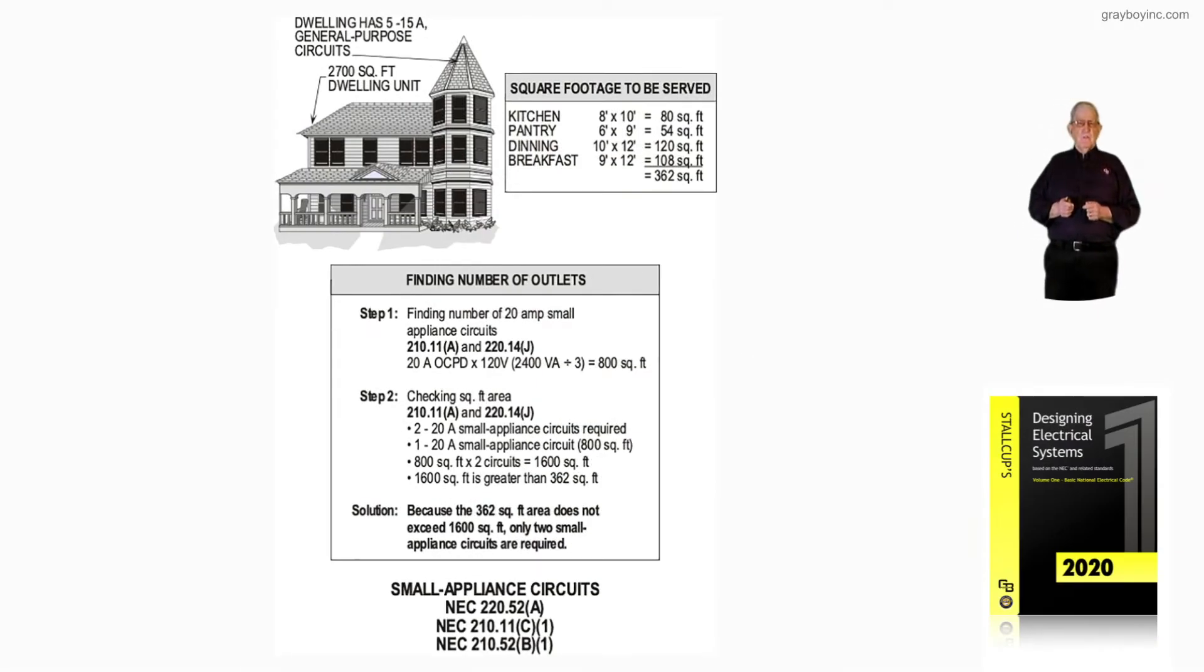Now, in the previous illustration, we figured the number of general-purpose circuits. When we determine the number of general-purpose circuits, that supplies all the lighting, the receptacles, and everything, but not the small appliance circuits.